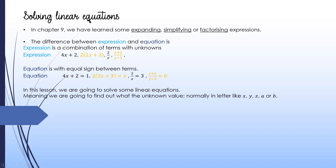In this lesson we are going to solve some linear equations — meaning if you have an equation like this, we are trying to solve what the x value is. The unknown can be any letter: x, y, a, b, z. For example, if we have 3x minus 2 equal to 4, we bring minus 2 to the other side and it becomes plus 2.